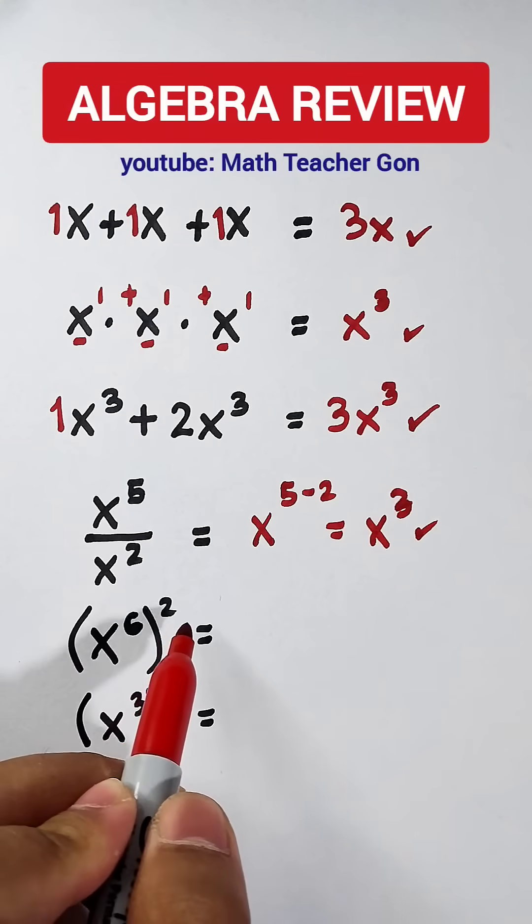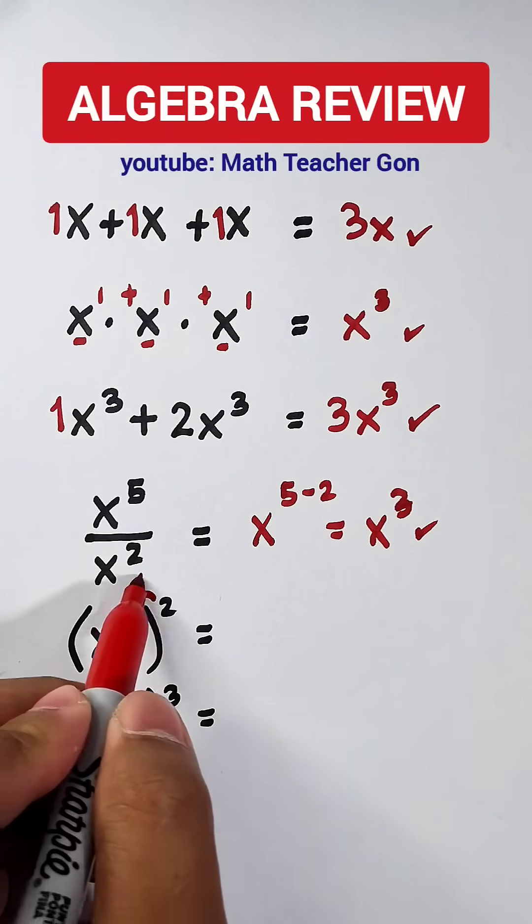Let's continue here. x raised to six, and there's an exponent of two outside, multiply the exponents, x...